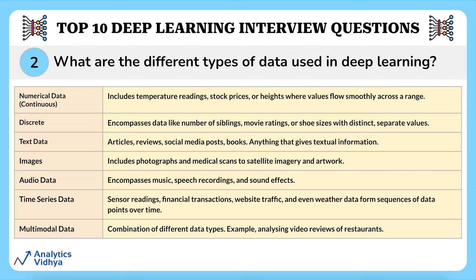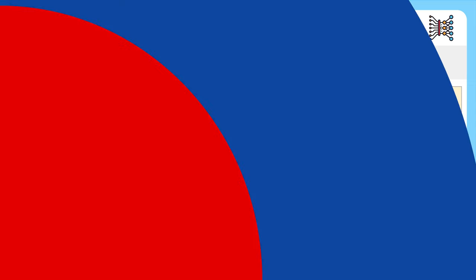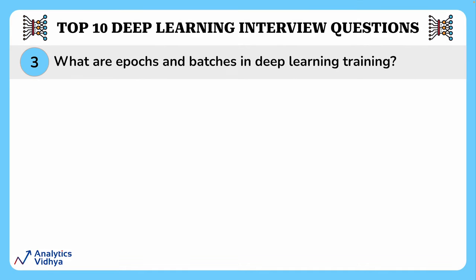Fifth is audio data — deep learning models can analyze music, speech recordings, and sound effects for music genre classification, speech recognition, and anomaly detection. Sixth is time series data, including sensor readings, financial transactions, website traffic, and weather data that form sequences of data points over time, used for forecasting and trend analysis. Finally, multimodal data combines different data types — for example, analyzing video reviews leveraging both audio and visual information for sentiment analysis.